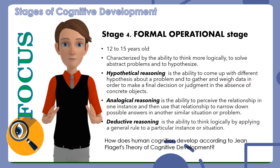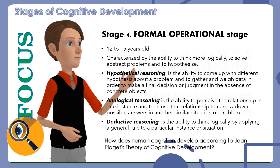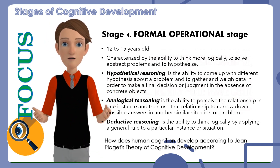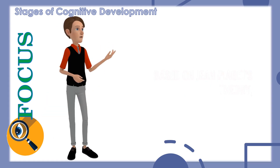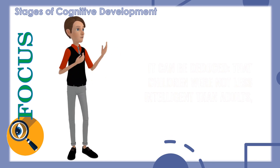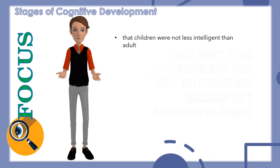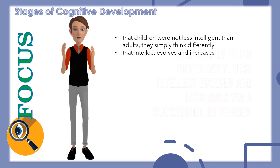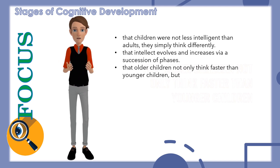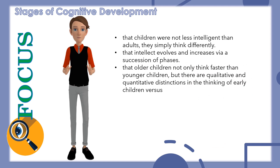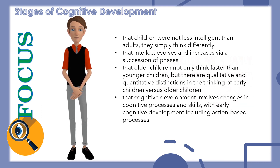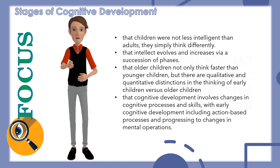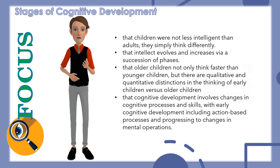Deductive reasoning: This is the ability to think logically by applying a general rule to a particular instance. For example, all countries near the North Pole have cold temperatures; Greenland is near the North Pole; therefore, Greenland has a cold temperature. From Jean Piaget's theory, it can be deduced that children are not less intelligent than adults — they simply think differently. Intellect evolves through a succession of phases. Older children not only think faster than younger children, but there are qualitative and quantitative distinctions in thinking across ages. Cognitive development involves changes in cognitive processes and skills, progressing from action-based processes to changes in mental operations.